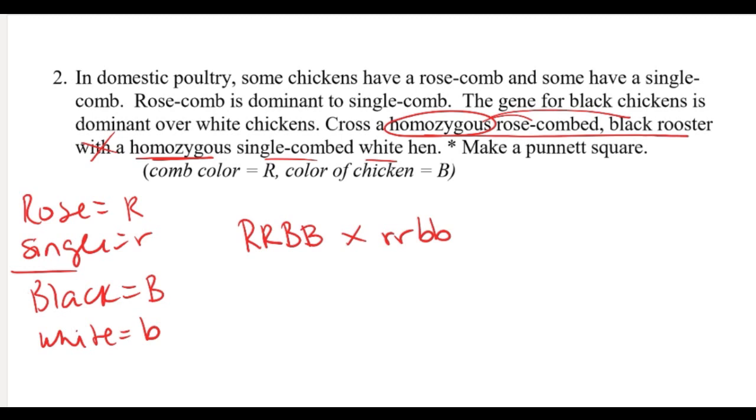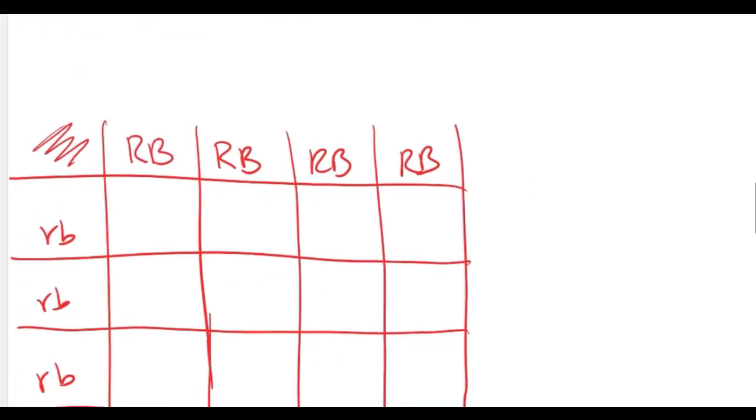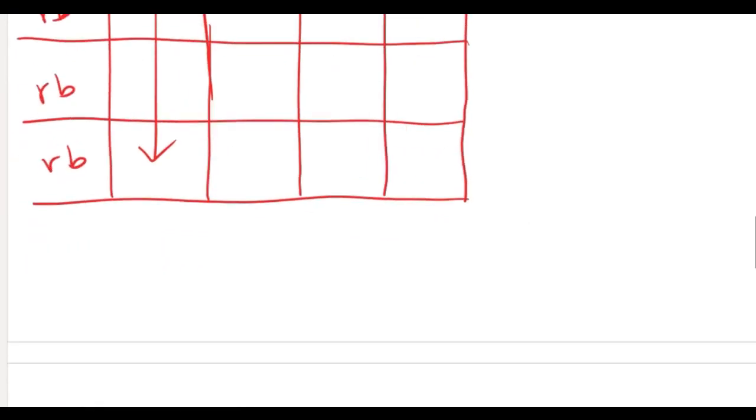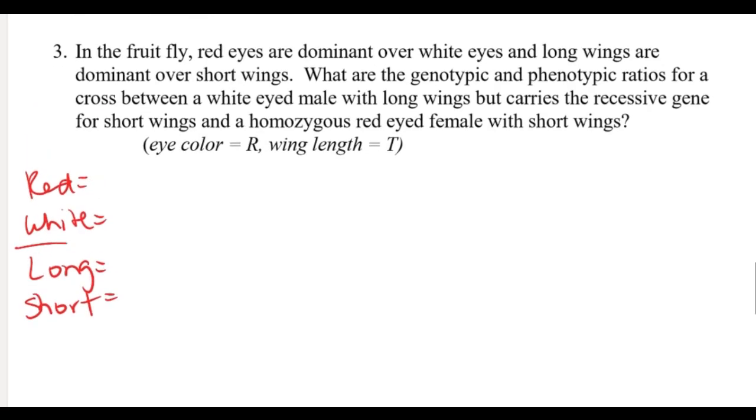Cross with a homozygous single comb white hen, so single comb - two little r's - and then two little b's. Gametes in this case are all the same. So all four are the same and all four are the same here. Now we're going to move our gametes down into our Punnett square, one in each of the open boxes, and we're going to recombine, paying attention to the dominant allele first. So big R little r big B little b, and just like before, they're all the same. It didn't ask any questions, so that's all I have to answer on that one.